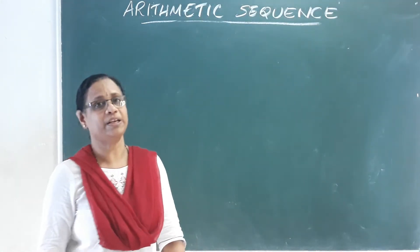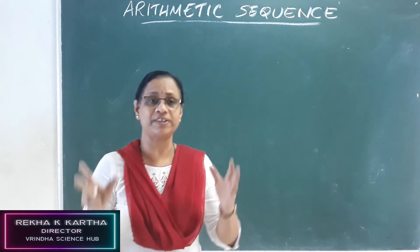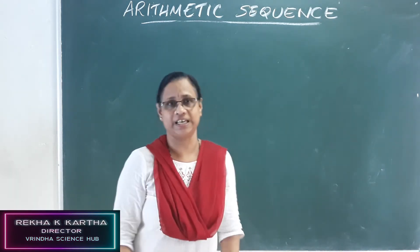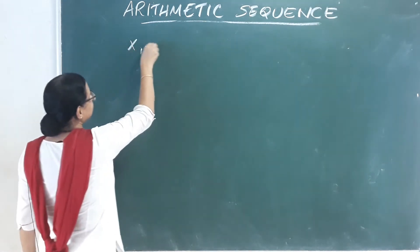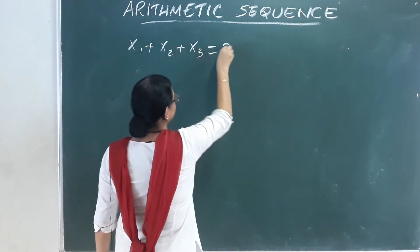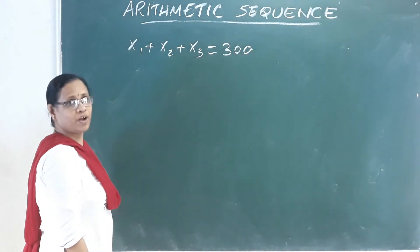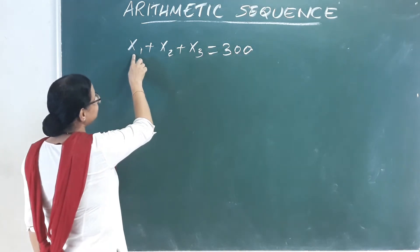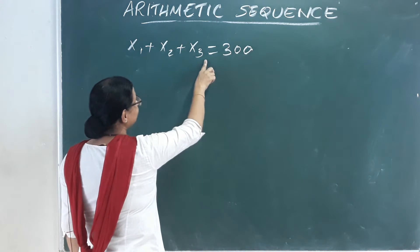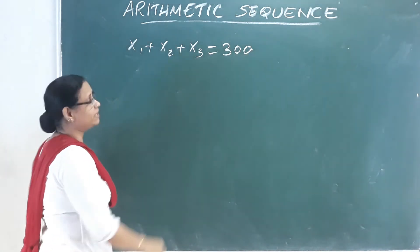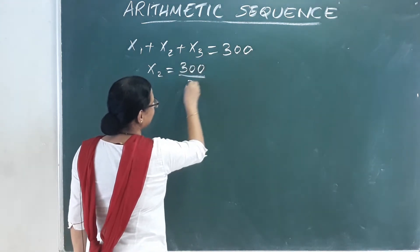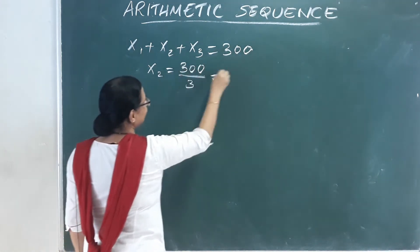What do you think about the question? First term 30, sum of the first three terms is 300. The sum of the first term is the first term, which is 30. Now let's say three terms — we think about the middle term x2, which is equal to 300 divided by 3, that is equal to 100.